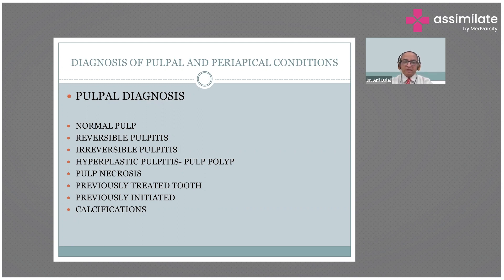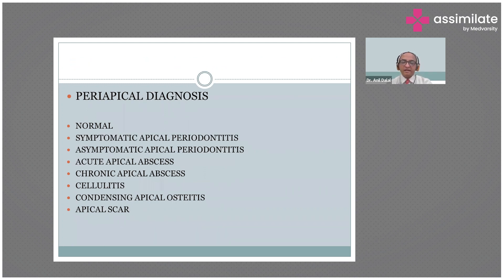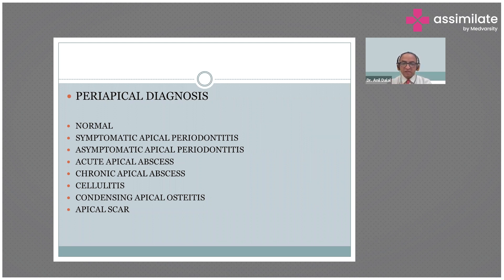As for periapical diagnosis, that is: normal periapical structure, symptomatic apical periodontitis, asymptomatic apical periodontitis — that is there is no pain — acute apical abscess, which has arisen suddenly and there's a swelling with pain, and chronic apical abscess.